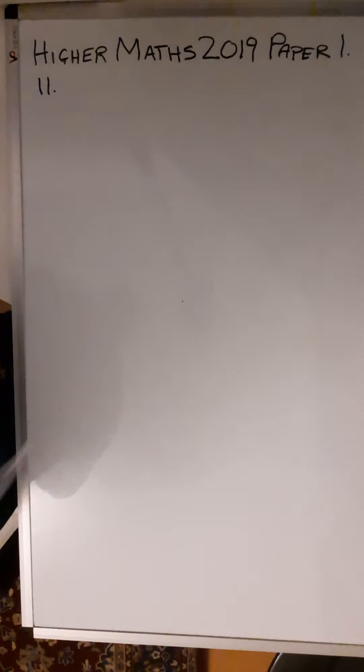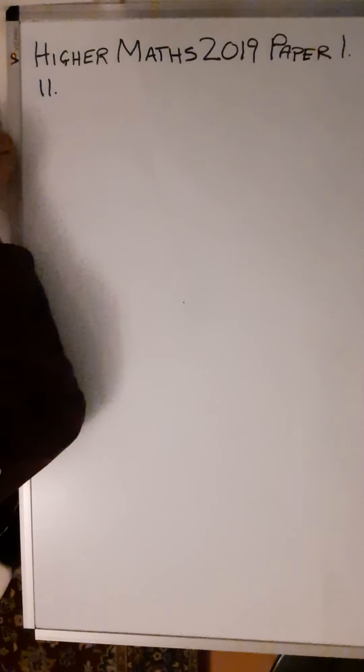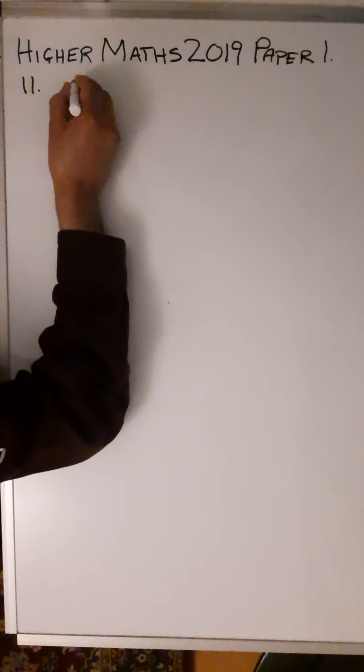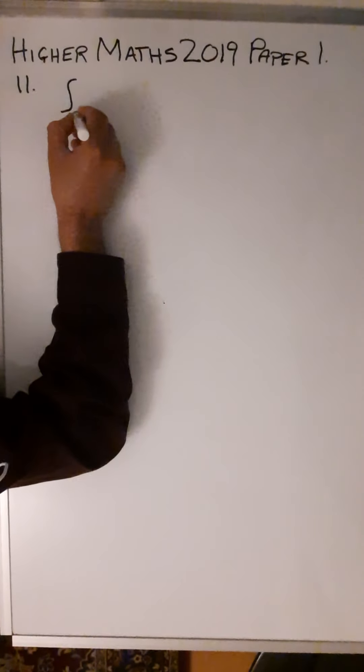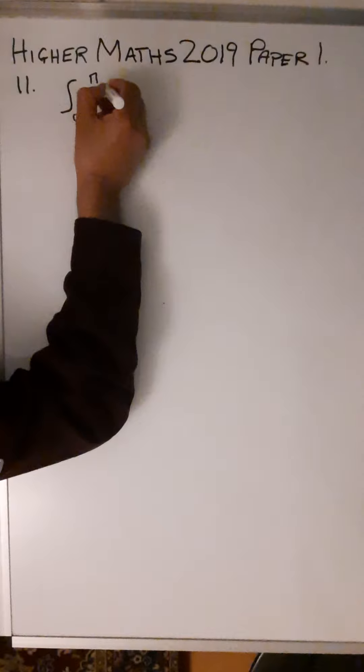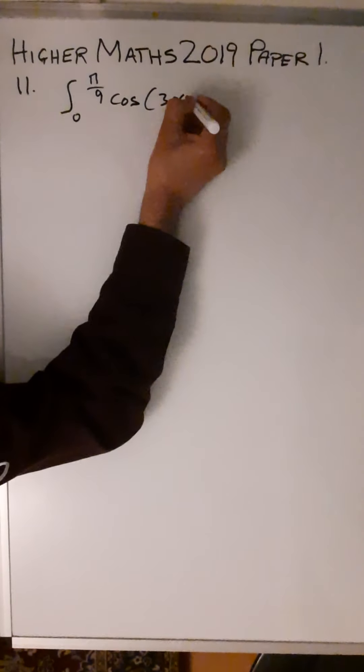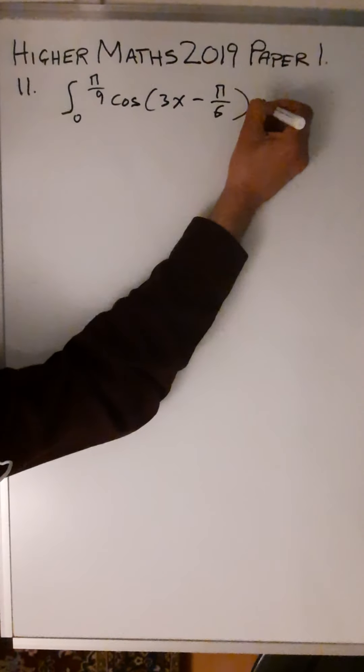Higher Maths 2019 Paper 1 Number 11. Evaluate the integral from 0 to π/9 of cos(3x - π/6)dx.